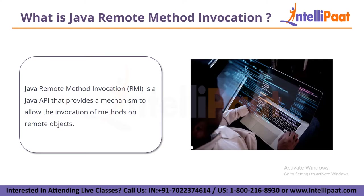Java remote method invocation, or RMI, is a Java API that provides a mechanism to allow the invocation of methods on remote objects. RMI is basically used for building distributed applications and it enables the communication between two JVMs running on different machines, allowing objects to interact as if they were local. RMI architecture is based on a client and server model where the client sends a request to the server, which processes the request and returns the response.